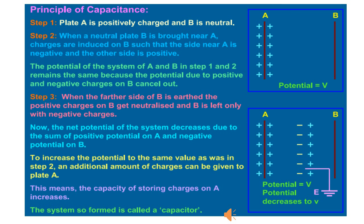The breakdown points occur at fields of the order of 3 into 10 to the power 6 volt meter inverse. This supports the limit of the capacitance of the conductor. Moreover, if we tend to have a single conductor of large capacitance, it will have practically inconvenient large size.